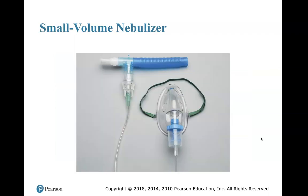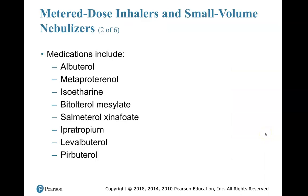This is your small-volume nebulizer. At the top, you see it with a T-mouthpiece. The albuterol goes in this cup. You can also take this cup and attach it to a non-rebreather — remove the reservoir bag, put the albuterol in and attach it, so you don't have to tell the patient to take their mask on and off. Medications include albuterol, metaproterenol, isoetharine, bitolterol mesylate, salmeterol, ipratropium, levalbuterol, and pirbuterol.